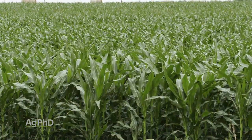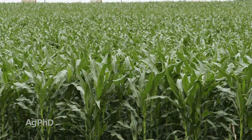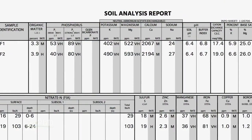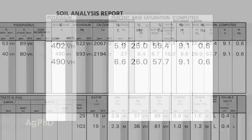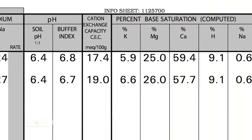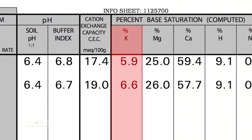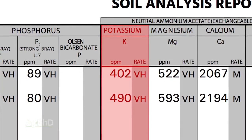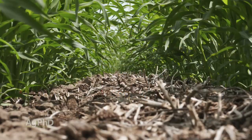There are a number of things we can do as farmers to influence standability in our crops. First, think about nutrients. By far and away, the number one nutrient you need to have that crop standing well is potassium. We're usually looking for two things: parts per million and percent base saturation — the ratio of potassium to some of the other nutrients. We'd like to see 4% to 8% base saturation for potassium, but we also need enough parts per million or pounds per acre to raise a really good crop, and that depends on your specific crop.